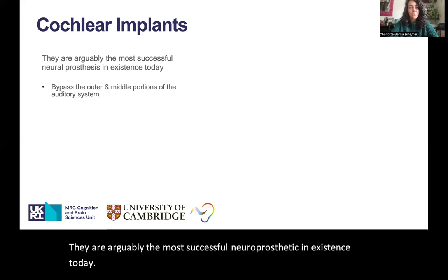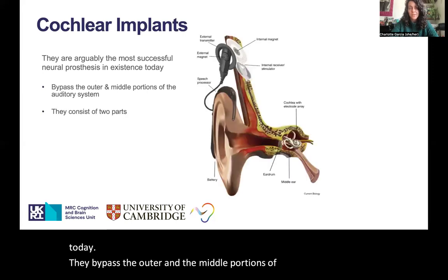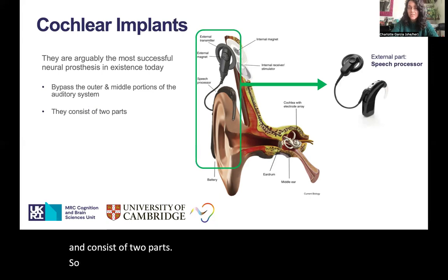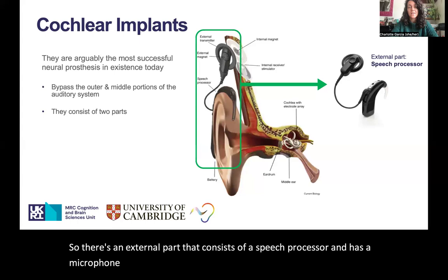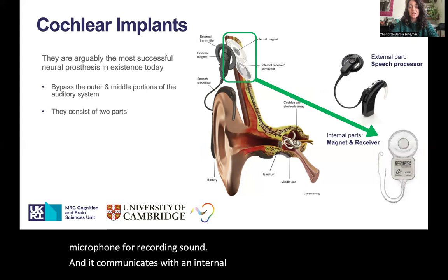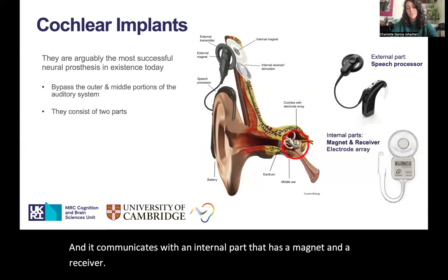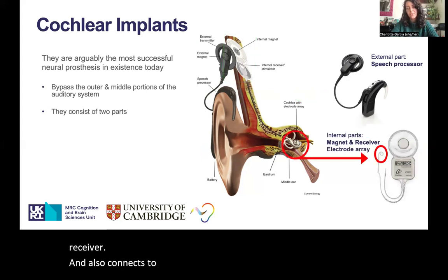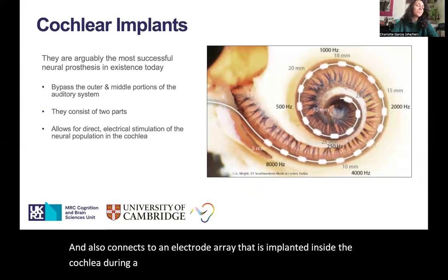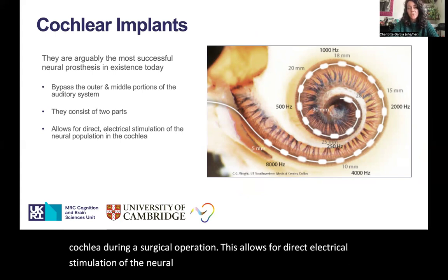They bypass the outer and the middle portions of the auditory system and consist of two parts. There's an external part that consists of a speech processor and has a microphone for recording sound, and it communicates with an internal part that has a magnet and a receiver and also connects to an electrode array that is implanted inside the cochlea during a surgical operation. This allows for direct electrical stimulation of the neural population in the cochlea using these electrodes, represented in white.